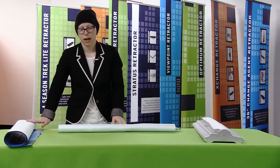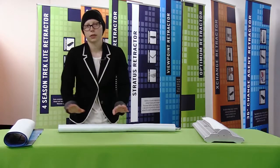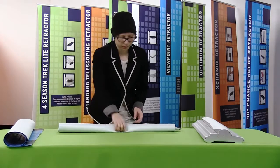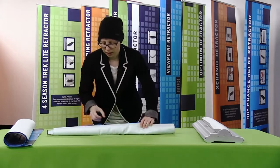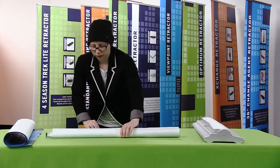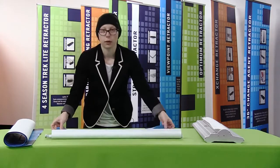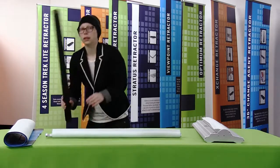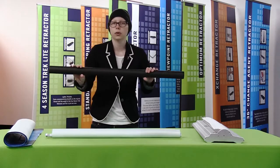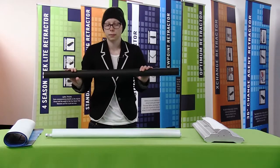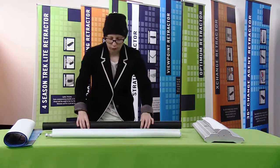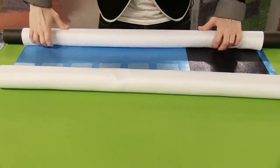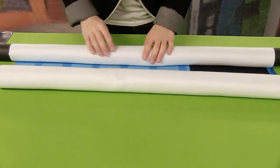Replacement graphics don't come with top rails, so you're going to have to use your current top rail. When rolling your graphic, I like to roll it with the graphic facing in, and then using a cardboard tube or a PVC pipe, I'm just going to roll it onto it. This prevents the graphic from getting creased.